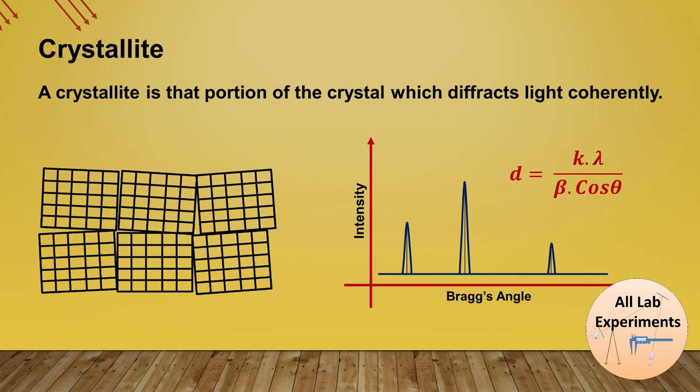As you can observe in this formula that the crystallite size and the FWHM are inversely proportional. As the crystallite size decreases, the width of the peak FWHM increases and you will observe broader peaks in your XRD pattern.